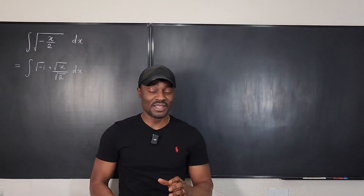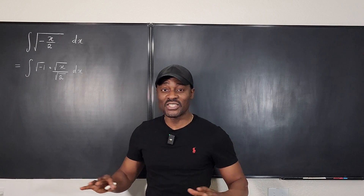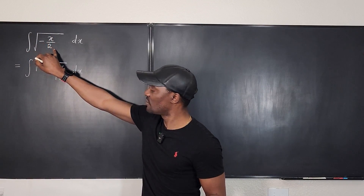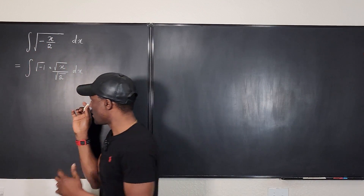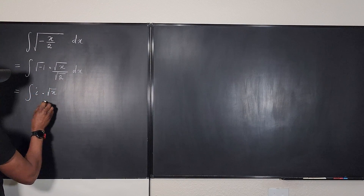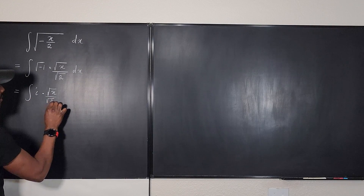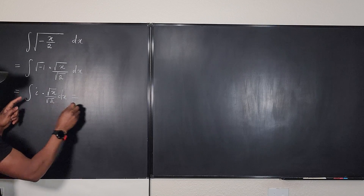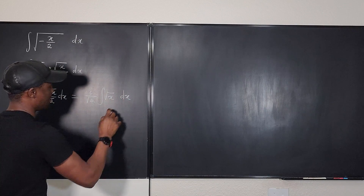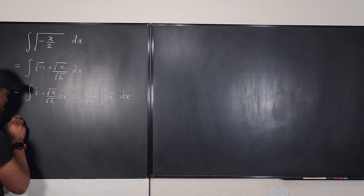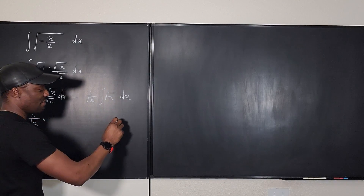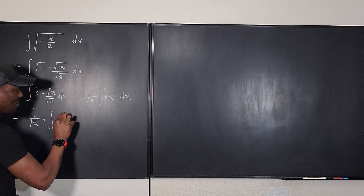The strategy I've adopted here is just taking it as a complex number, because the square root of this times the square root of this — all of them together — will go back to the original. So this becomes the integral of i multiplied by the square root of x over the square root of two. I can pull out i, giving i over the square root of two, and then I have the integral of the square root of x dx, written as x to the one-half dx.